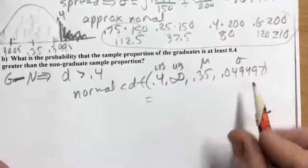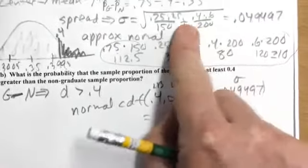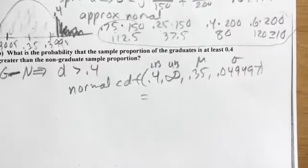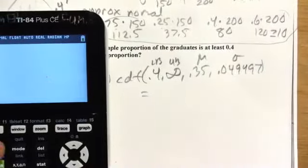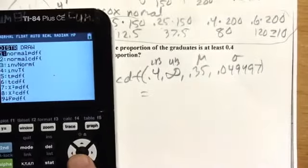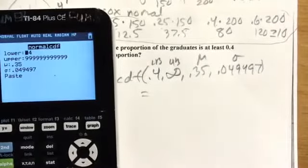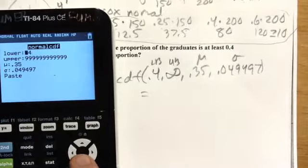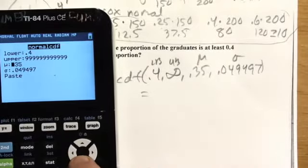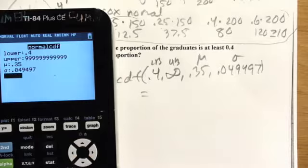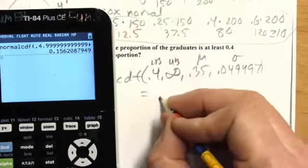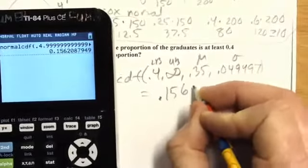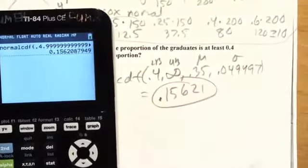Using normal CDF from 0.4 to infinity, with mean 0.35 and standard deviation 0.049497: entering those values into the calculator gives approximately 0.1562.